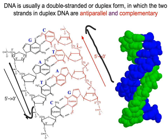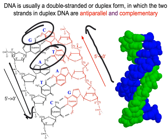Complementarity just refers to the base pairing. G and C like to base pair with each other. A and T like to base pair with each other. When they get together, that makes a more stable duplex structure, like the one shown over here on the right. A complex can be formed even if the base pairs don't match, but it will be more stable if the base pairs do match. So anti-parallel complementarity makes a more stable duplex structure.